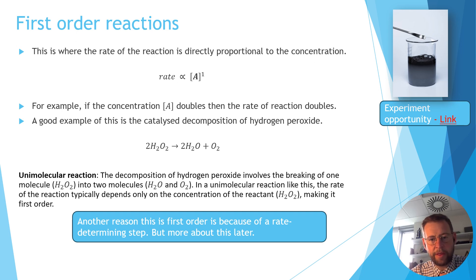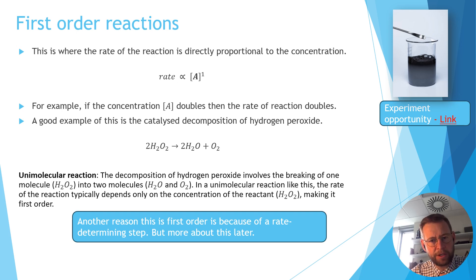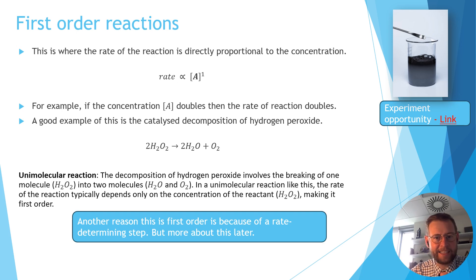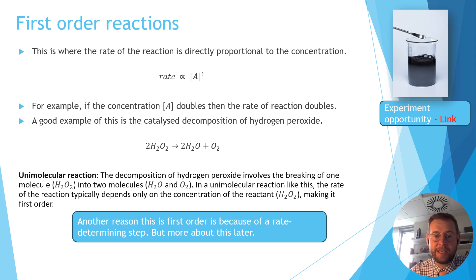So how about this one? The rate of reaction is proportional to the concentration of A to the power one. That means they're directly proportional — the more concentrated A is, the higher the rate. A lot of reactions are directly proportional to the concentration of the substances involved. It also means that if you double the concentration of A, you double the rate of reaction.